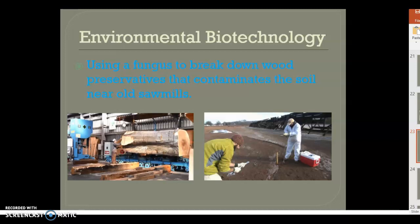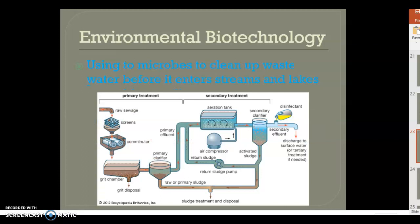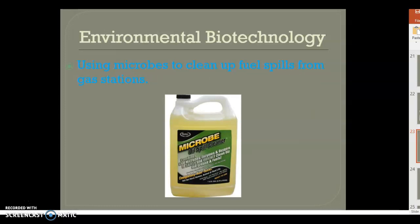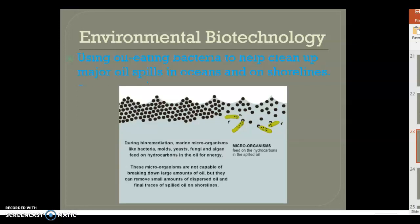Using fungus to break down wood preservatives — we put preservatives on wood to protect it from deterioration, termites, insects, and diseases. Once you're done using the wood, fungus can break it down. Using microbes to clean up wastewater before it enters streams and lakes is another approach, avoiding the use of chemicals and fuels. Microbes made through biotechnology can also be applied to fuel spills from gas stations — you put the microbe on the spill and it eats it up.